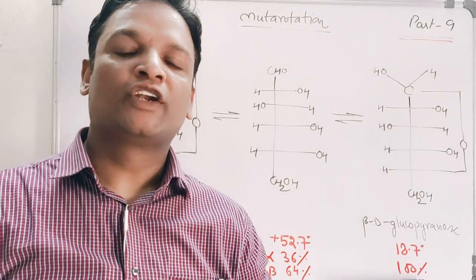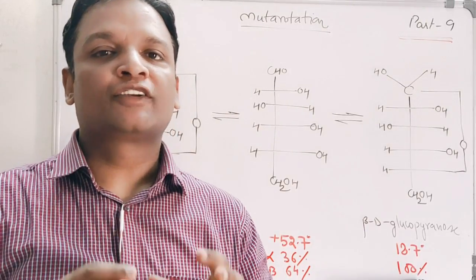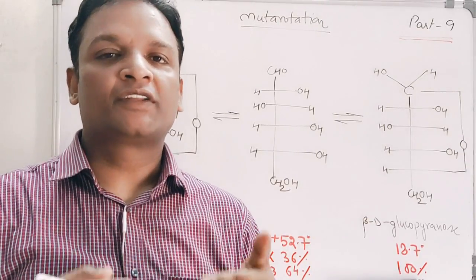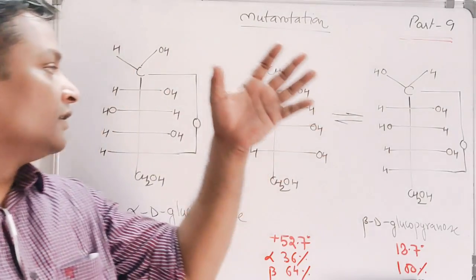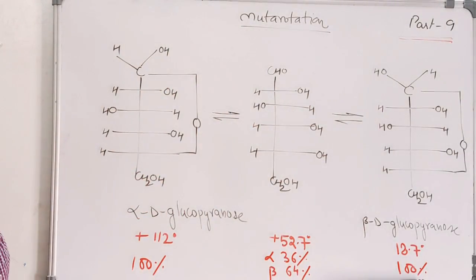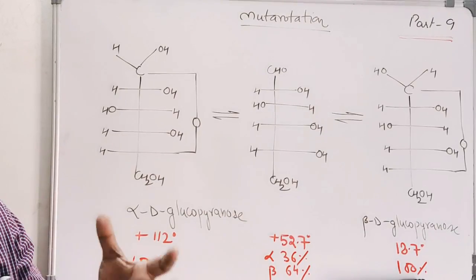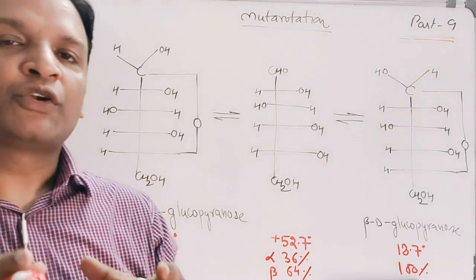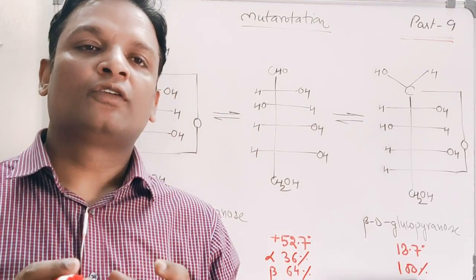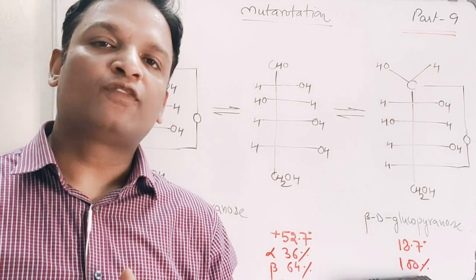Hello students, I welcome you to a new video. In today's video we will discuss the concept called mutarotation in sugar chemistry. Let's see what mutarotation is, because we all know that sugar exists in a cyclic form as well as an open chain structure. Mutarotation is a process when we take one type of sugar — suppose I take alpha-D-glucose.